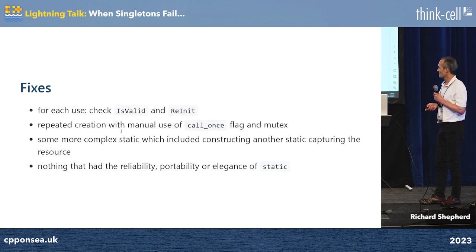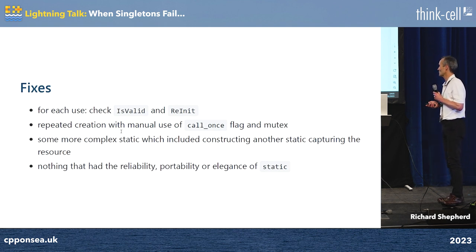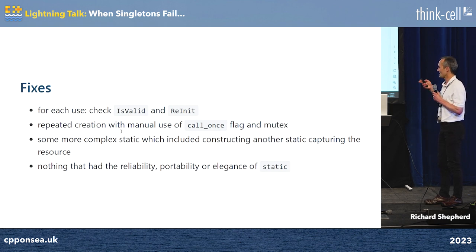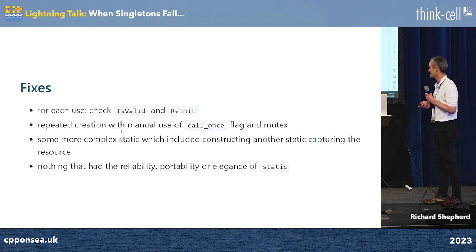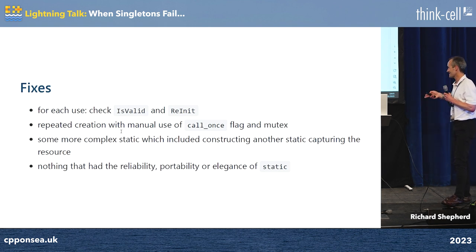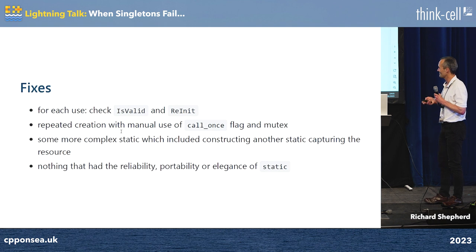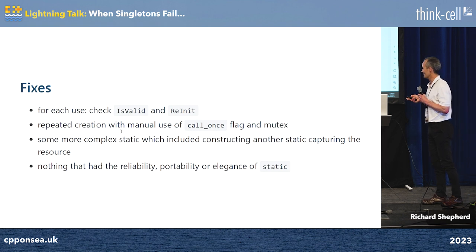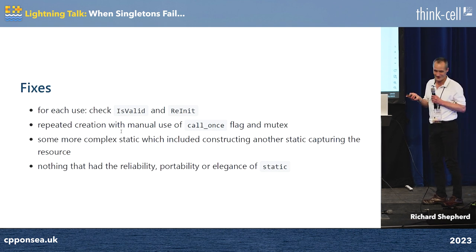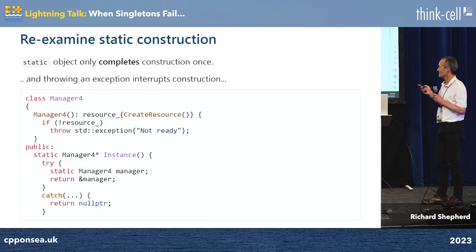We looked at various possibilities: runtime checks on whether it's a valid singleton, and if not then reinitialise it — some sort of just-in-time thing — or getting in there in the static construction and having some sort of a loop that would keep trying it until it succeeded, but we couldn't really risk that getting out in the wild in case it never succeeded. We had some ideas about nested static objects so that the outer one wouldn't run if the inner one hadn't completed successfully. None of them really worked, but they did all lead us towards thinking more carefully about static — the fact that static only runs once, but crucially, it only completes construction once.